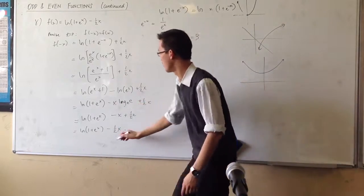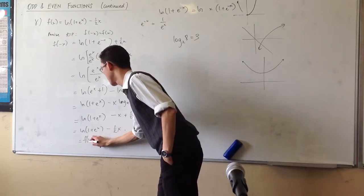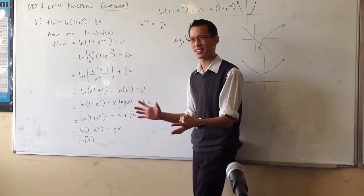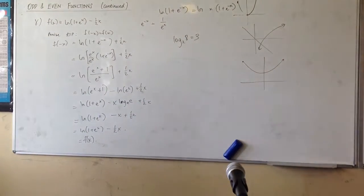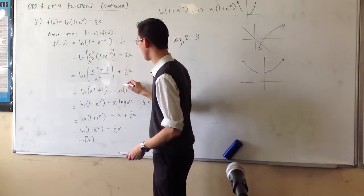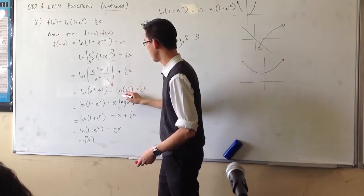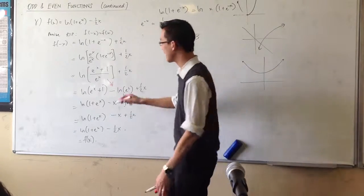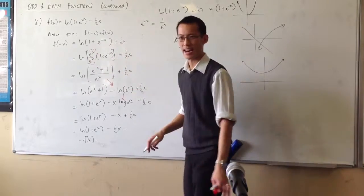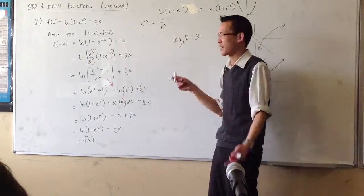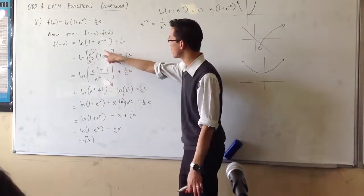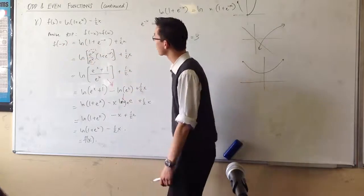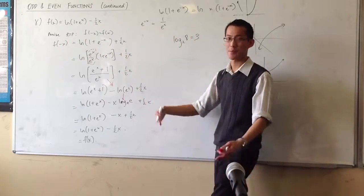There are really two tricky things in here. First, you need to know your log laws — going from the fraction inside the log to the split form, and simplifying. Second, you have to understand the multiplication step: why we multiplied by e to the x over e to the x, turning the expression back into the form we needed. That's the key insight for both part alpha and part beta.